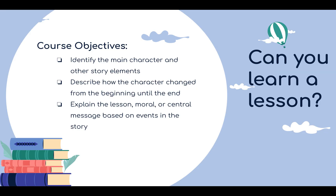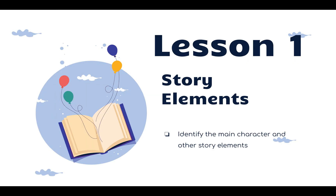So this week, can you learn a lesson? Our course objectives are: I want you to identify the main character and other story elements. I want you to be able to describe how the character changed from the beginning until the end. I want you to be able to explain the lesson, moral, or central message based on the events in the story. Today is lesson one: story elements. Let's see about identifying the main character and other story elements.